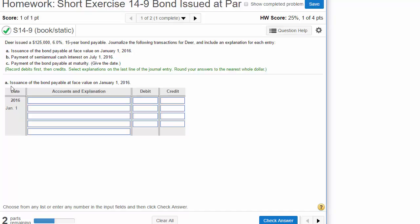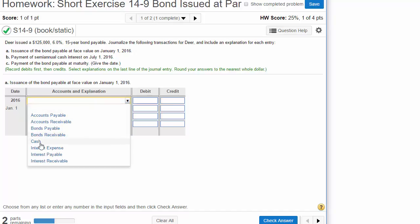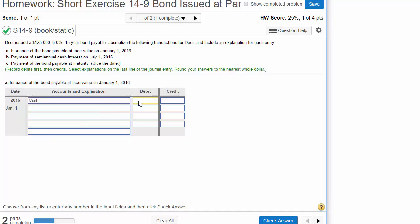We need to journalize the issuance, which means the sale of the bonds payable at face value. For every $1,000 bond, we're getting exactly $1,000 on January 1st, 2016. We are receiving cash. The company issuing the bonds gets exactly $125,000.